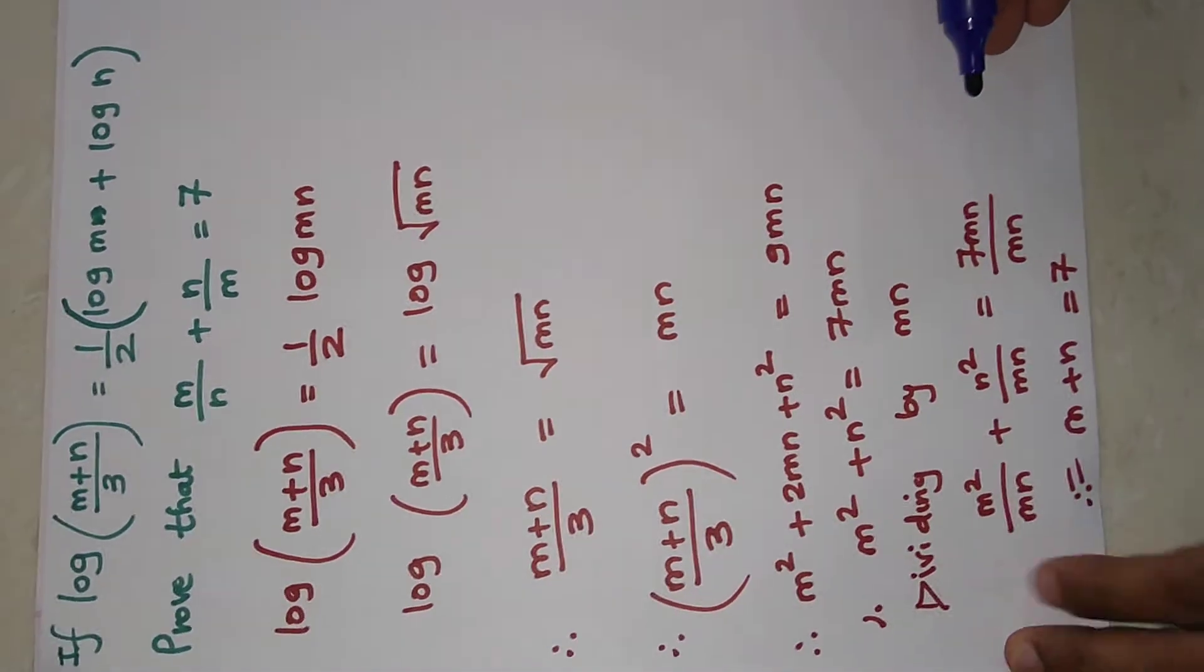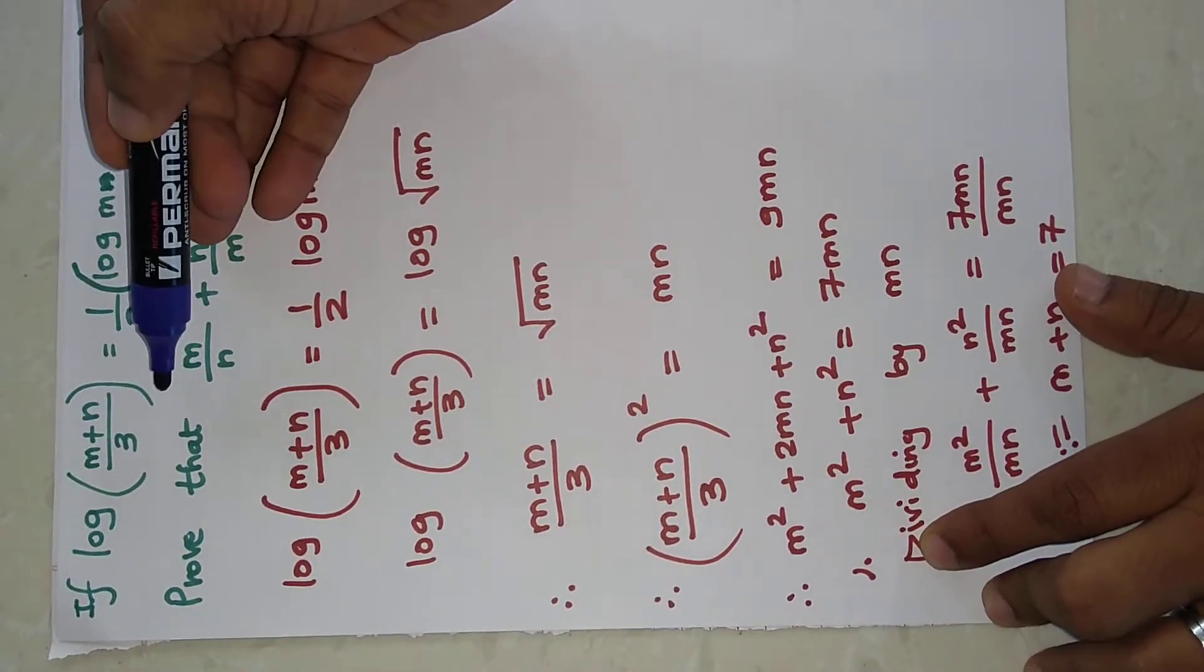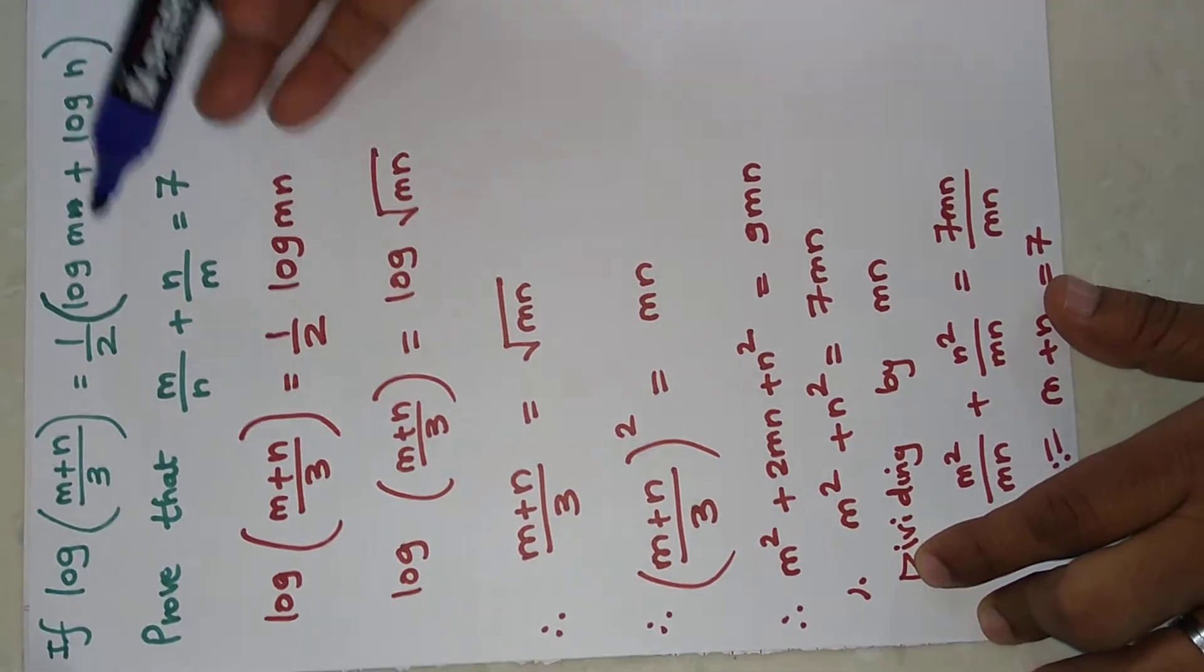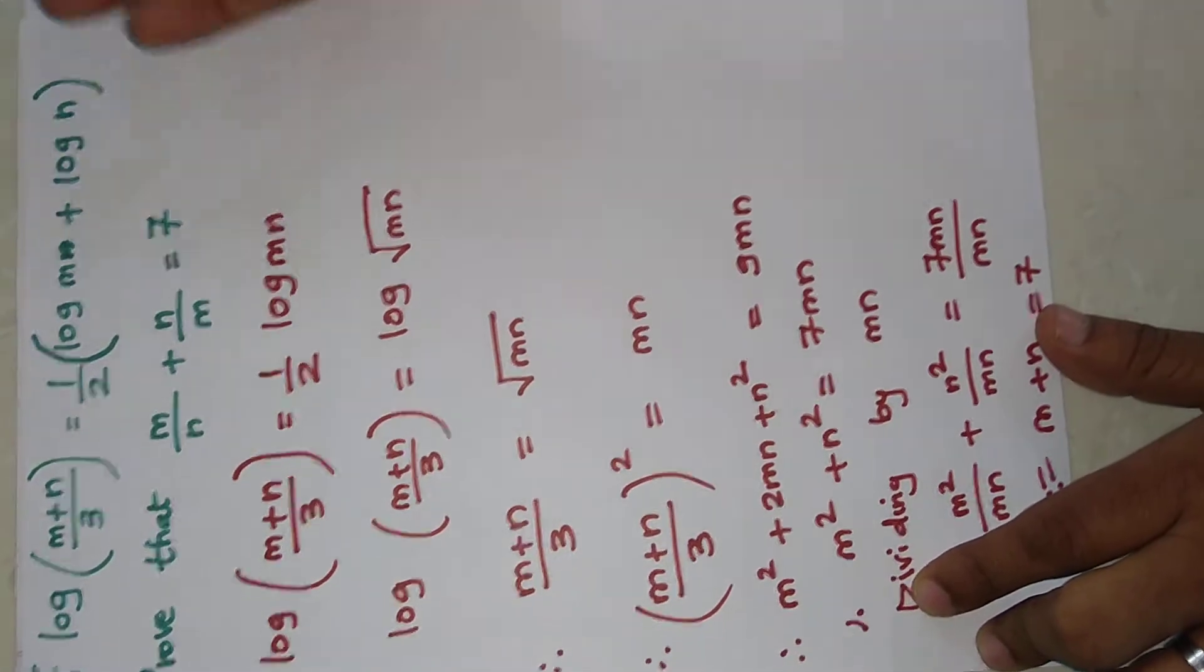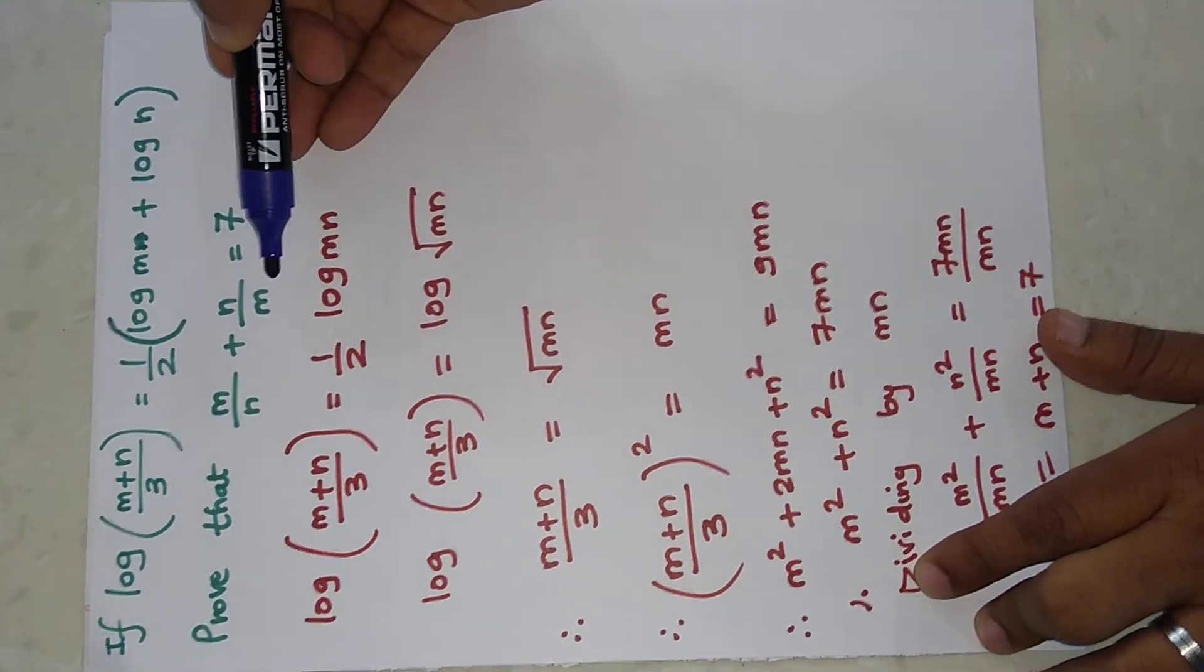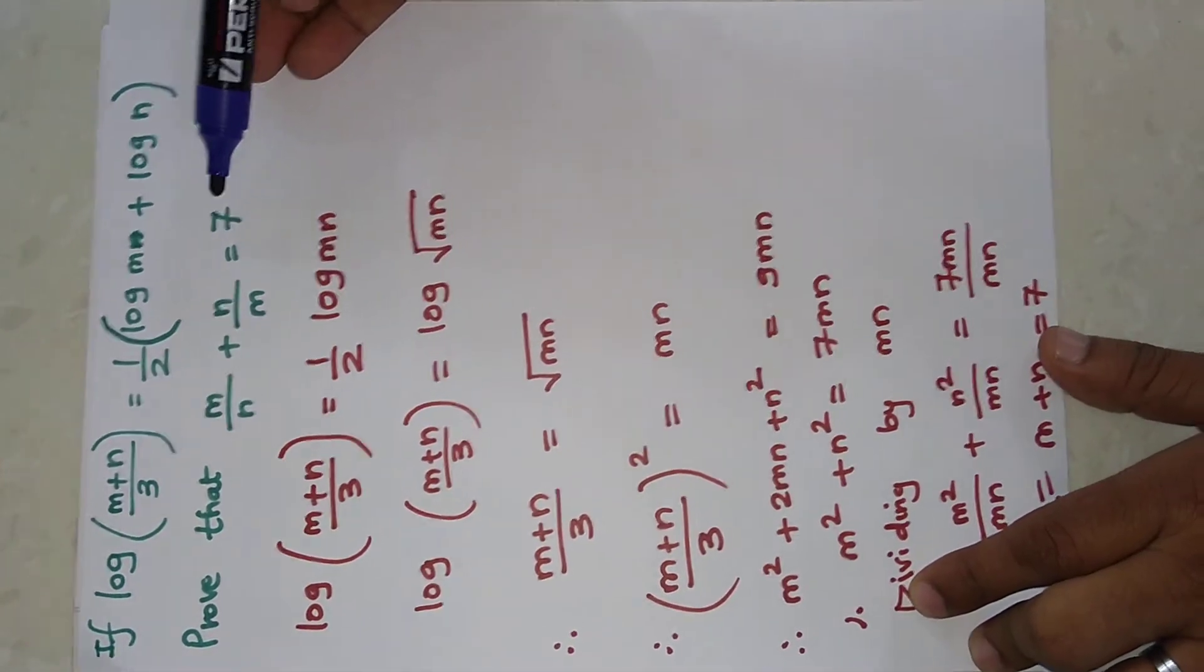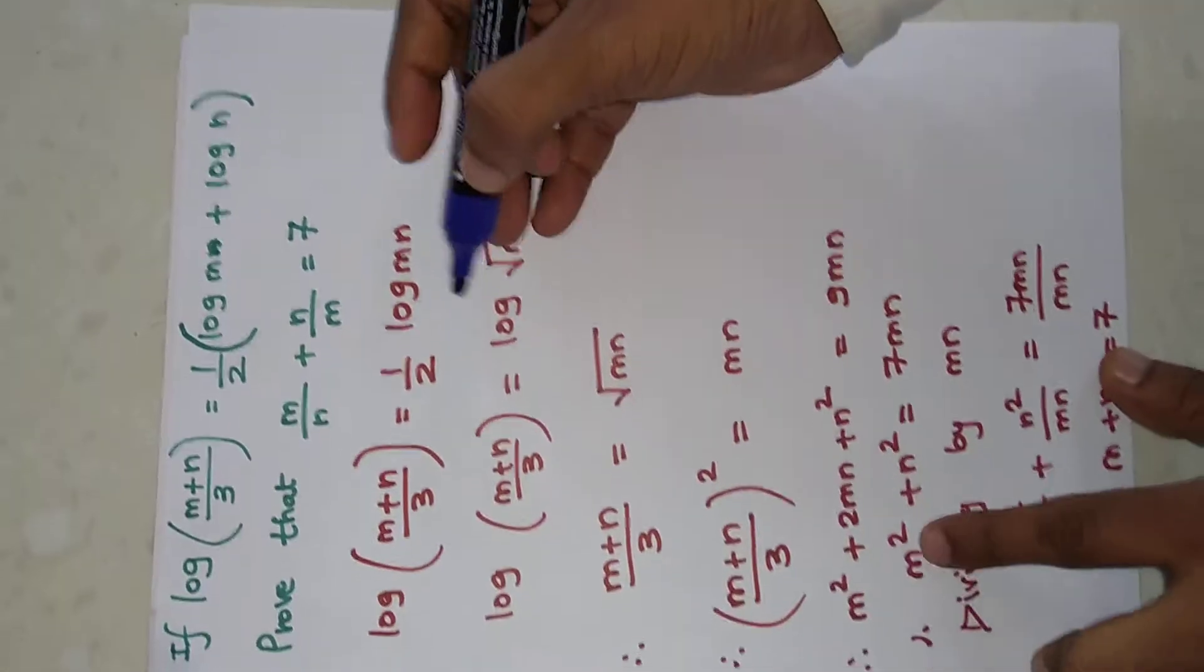Hello friends, today's topic is logarithm. The question is: if log((m+n)/3) equals 1/2 times the bracket log(m) plus log(n), this is given. We have to prove that m/n plus n/m equals 7. So first of all, the given equation we are writing as it is.